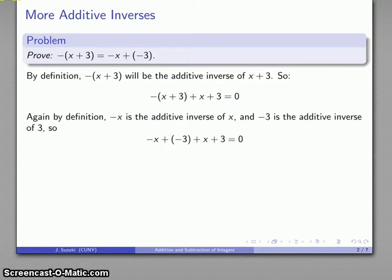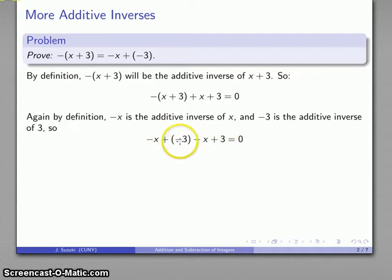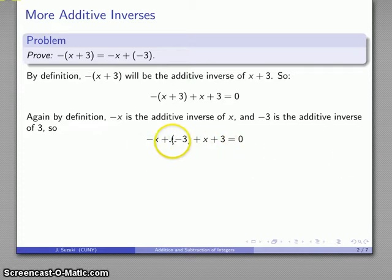We're going to employ a duck proof here. What I want to do is trade out this expression, negative x plus 3, with something that still gives me a true equation. So now I have this x plus 3 equals 0. I know that if I add the additive inverse of x and the additive inverse of 3, I still get a sum of 0. Here's additive inverse of x plus x, additive inverse of 3 plus 3.